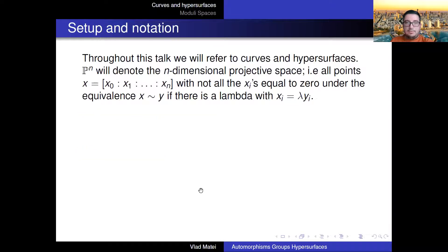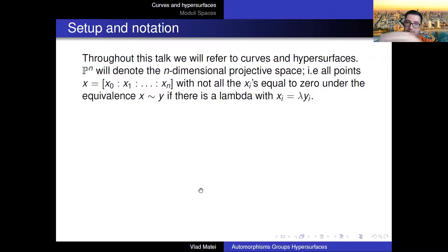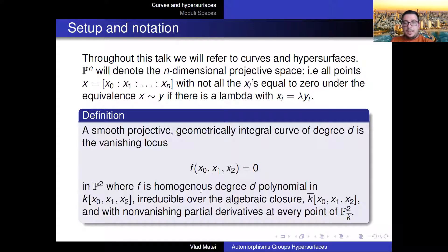Let me fix some definitions. We're going to talk about curves and hypersurfaces. For people who are not familiar, P^N is going to denote the N-dimensional projective space — these are points under the equivalence relation that you can rescale to get an equivalent point.